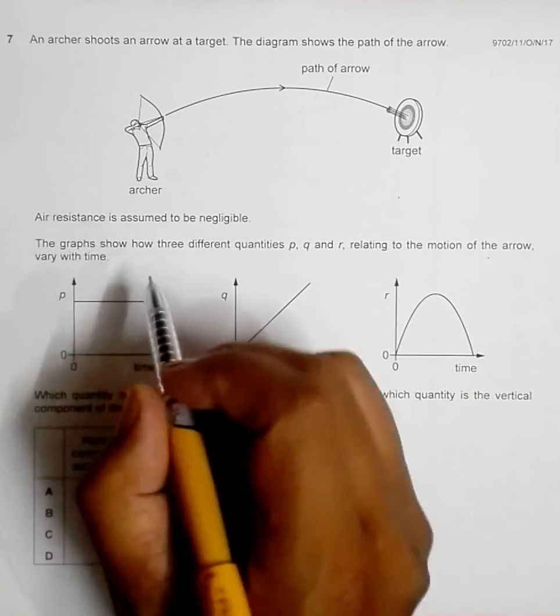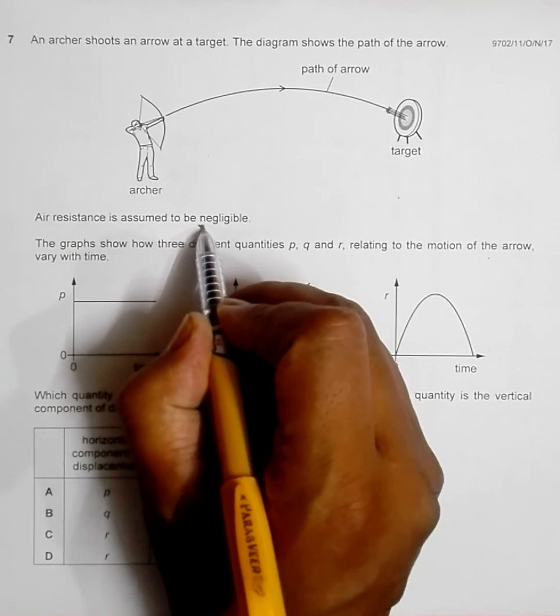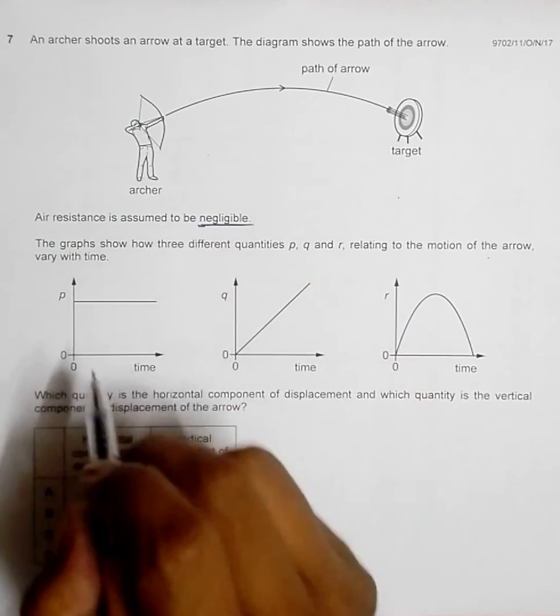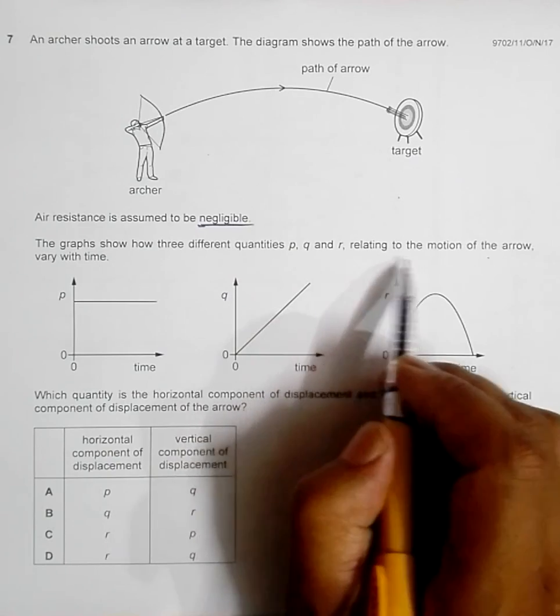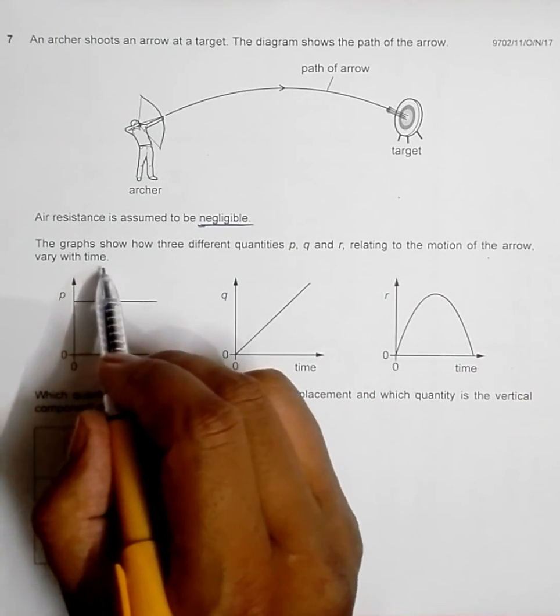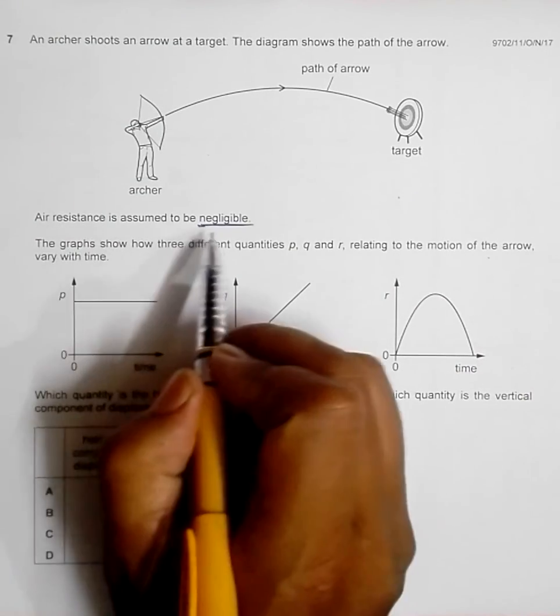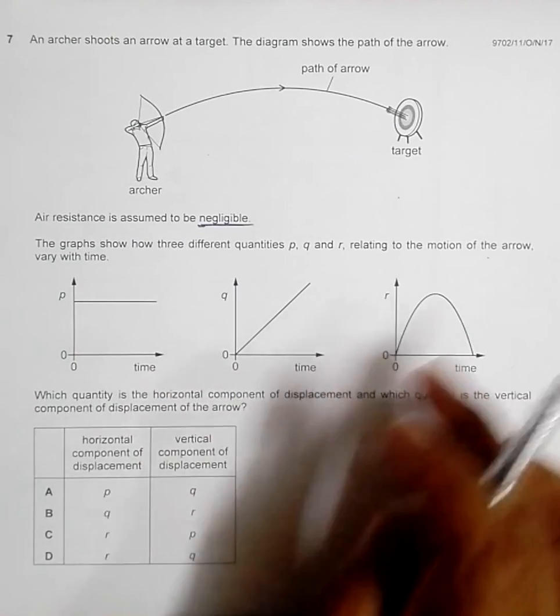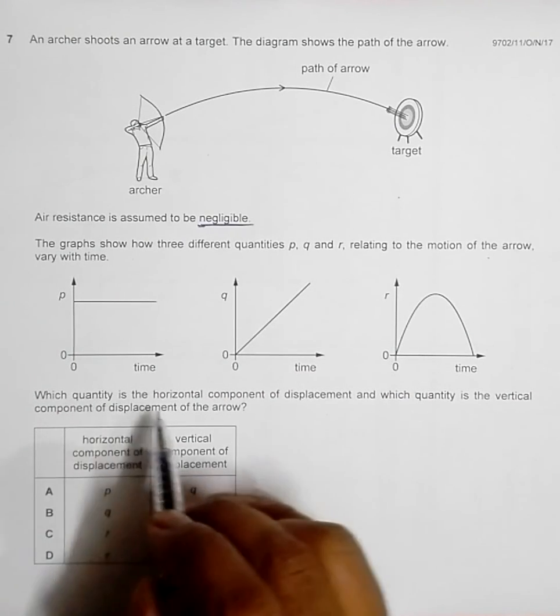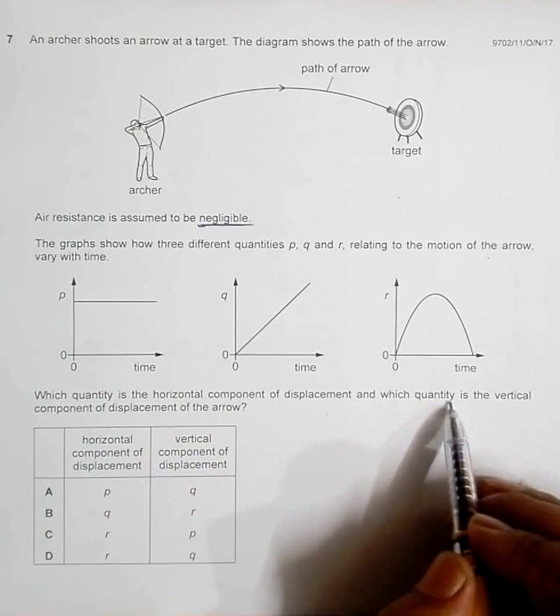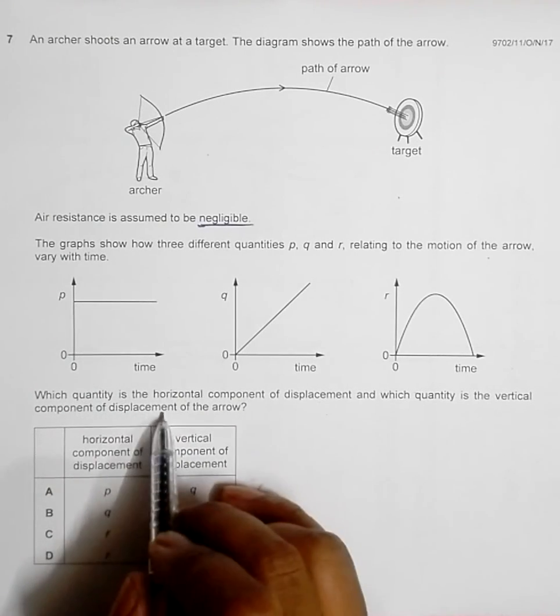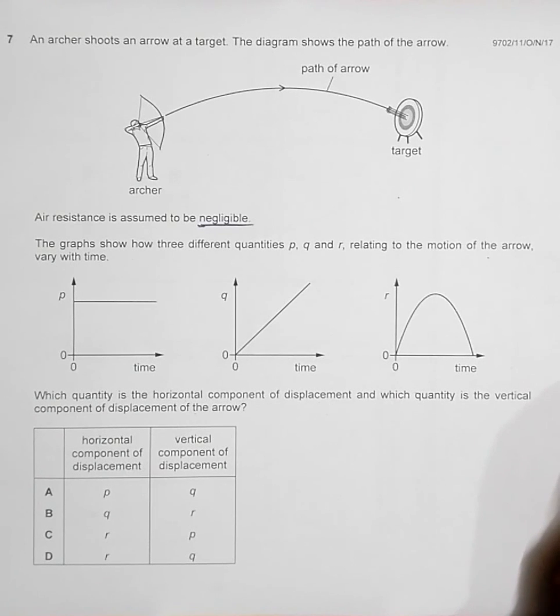Air resistance is assumed to be negligible, which is important. The graphs show how three different quantities P, Q, and R relating to the motion of the arrow vary with time. We need to identify which quantity is the horizontal component of displacement and which quantity is the vertical component of displacement of the arrow.